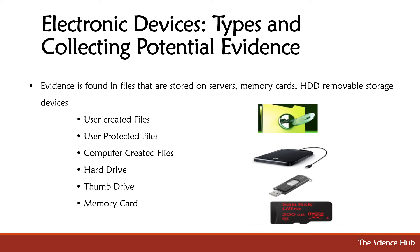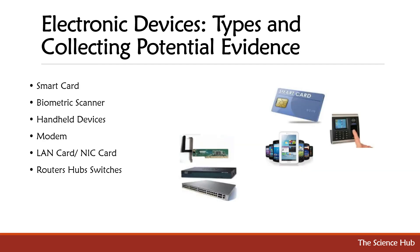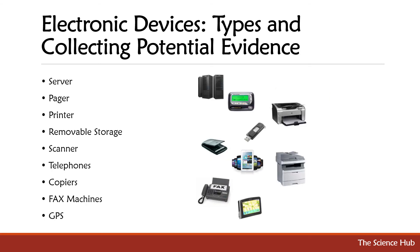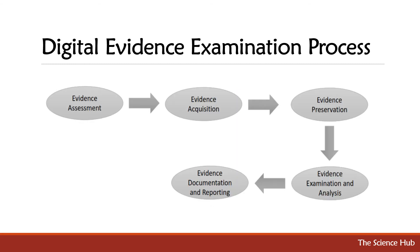Electronic devices — types and collecting potential evidence: evidence is found in files stored on servers, memory cards, HDDs, and removable storage devices — including user-created files, user-protected files, and computer-created files. Devices include hard drives, thumb drives, memory cards, smart cards, biometric scanners, handheld devices, modems, LAN/NIC cards, routers, hubs, switches, servers, pagers, printers, removable storage, scanners, telephones, copiers, fax machines, and GPS devices.